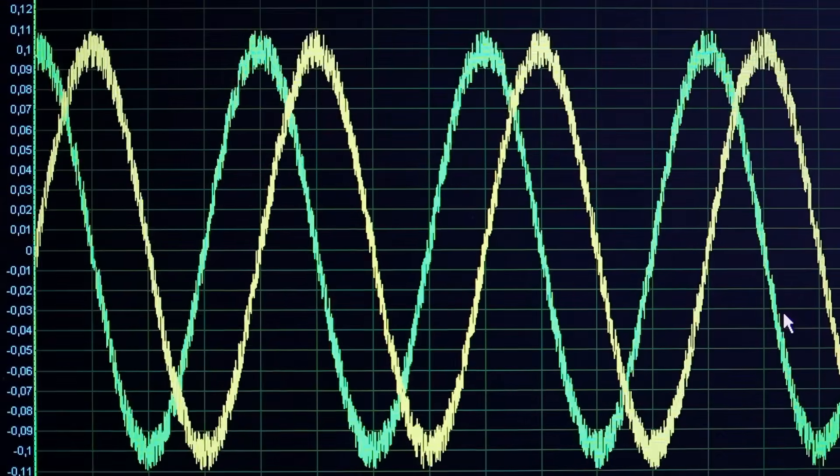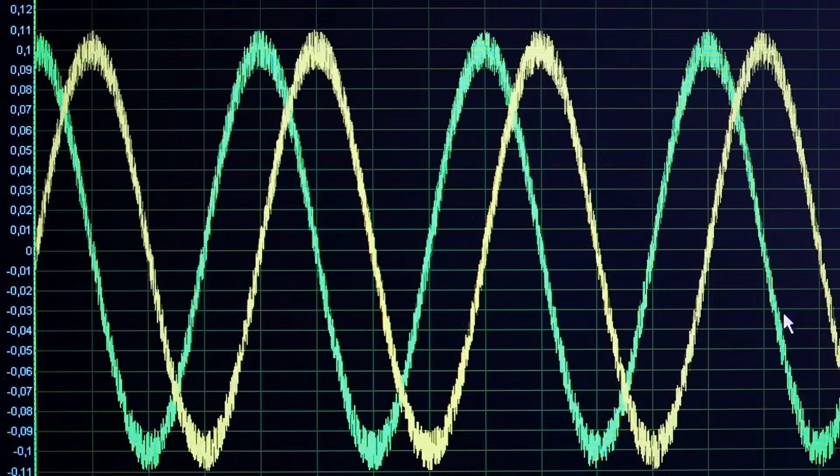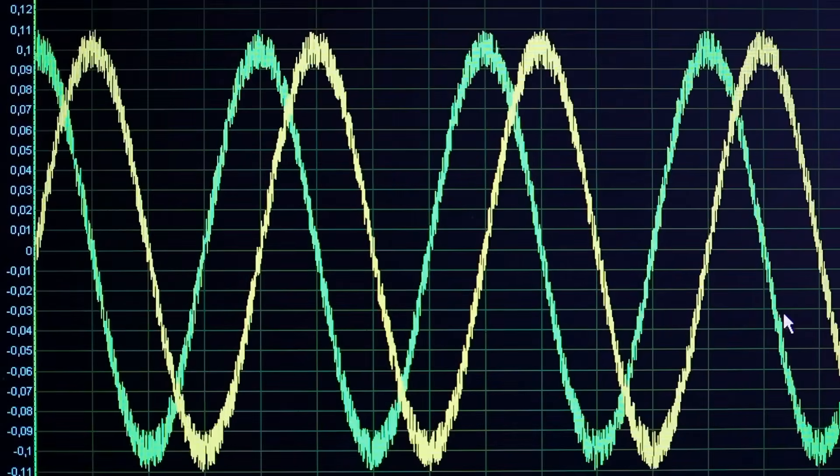Frequency refers to how often a wave, like light or sound, completes a cycle per second, measured in hertz. High-frequency means more cycles per second, such as gamma rays and ultraviolet light, and is associated with higher energy.